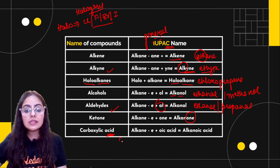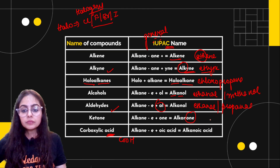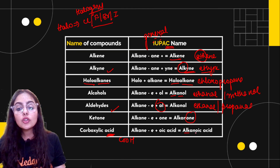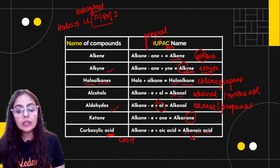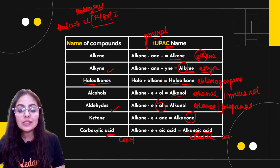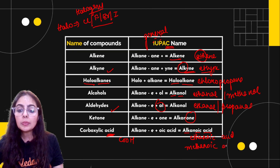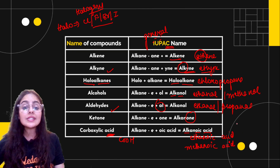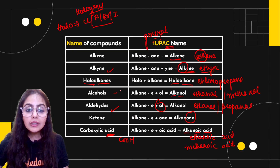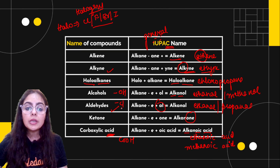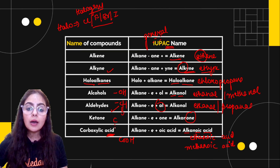For carboxylic acids, the functional group is -COOH and the suffix is 'oic acid'. So within alka-noic acids we can have ethanoic acid or methanoic acid and so on. You can write a few examples for yourself, along with their formulas, so that when you revise at the end you can recall quickly.